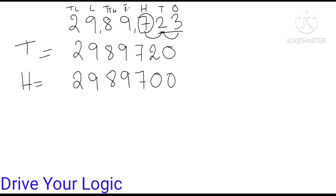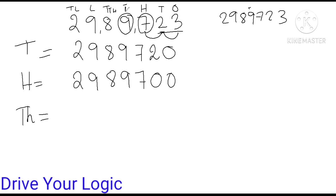After hundreds comes the thousands place. Round off to thousands — this place I have to round it off. What do I see? The next number is 7. Yes, it is more than 5, so there will be a plus one. But here there is one twist — since I have to round up this place, I check 7, and yes it is more than 5, so I have to add 1 here.